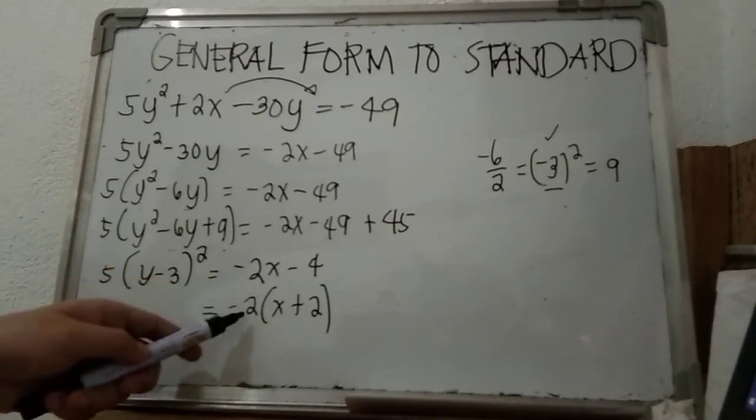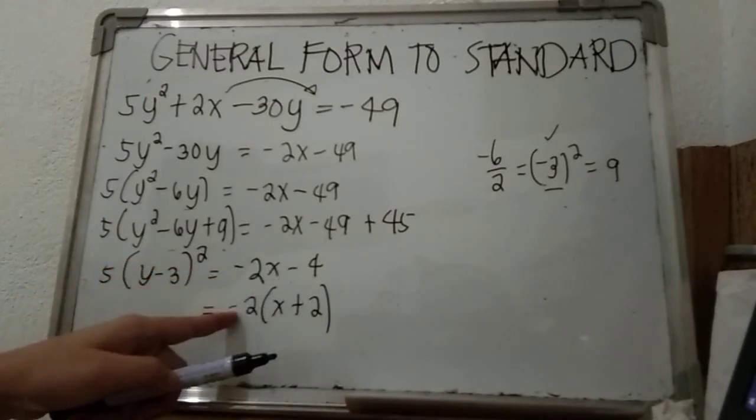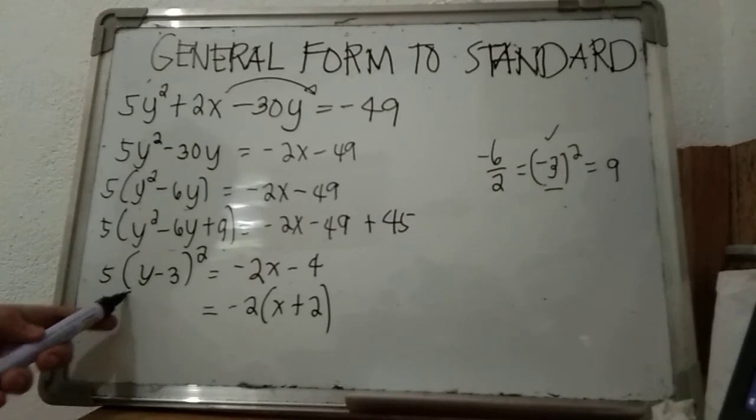If you distribute, negative 2 times x is negative 2x, negative 2 times positive 2 is negative 4. So these are equal; we are just factoring. Just copy this.